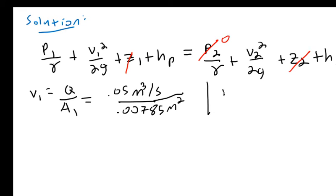And then V2 is going to be equal to 0.05 cubic meters per second, the same flow rate, divided by 0.00196 square meters, the area at point two. And this is then going to equal a velocity of 25.5 meters per second here.